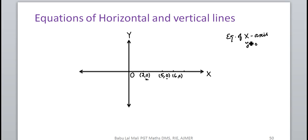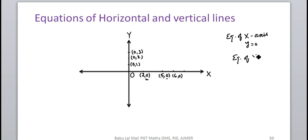The equation of the x-axis means y=0. All points on the y-axis have x-coordinate 0 — for example (0,1), (0,2) — so the equation of the y-axis is x=0, and y=0 is the equation of the x-axis.